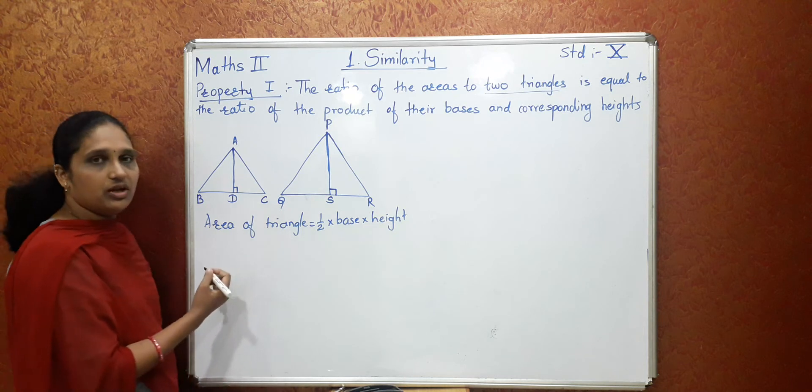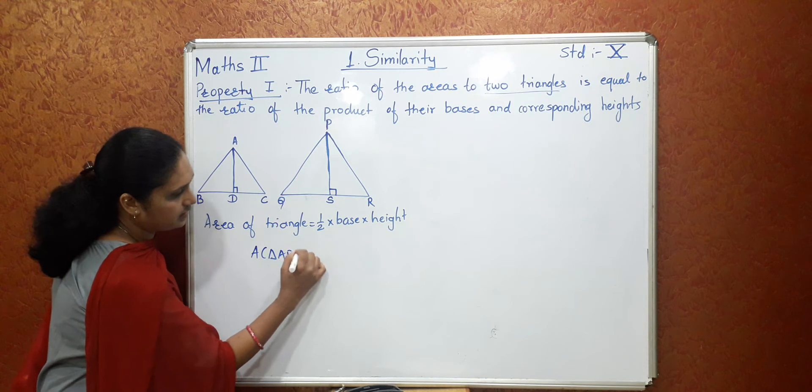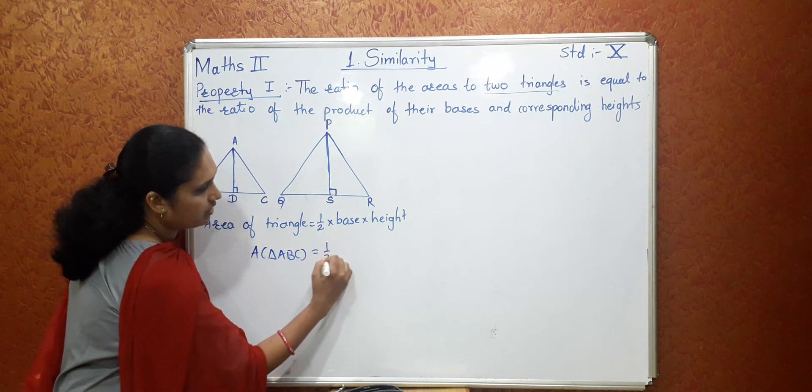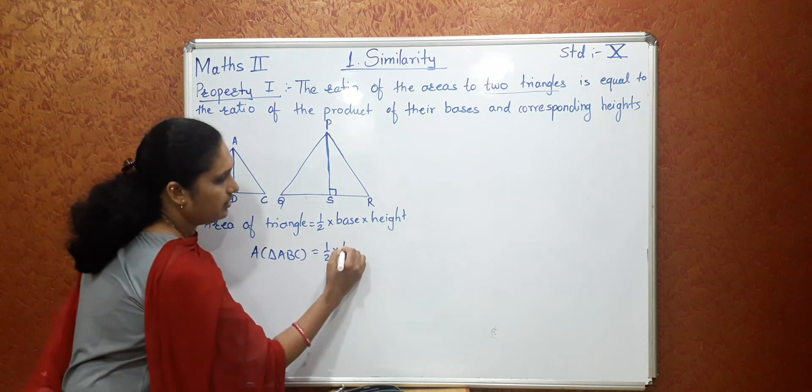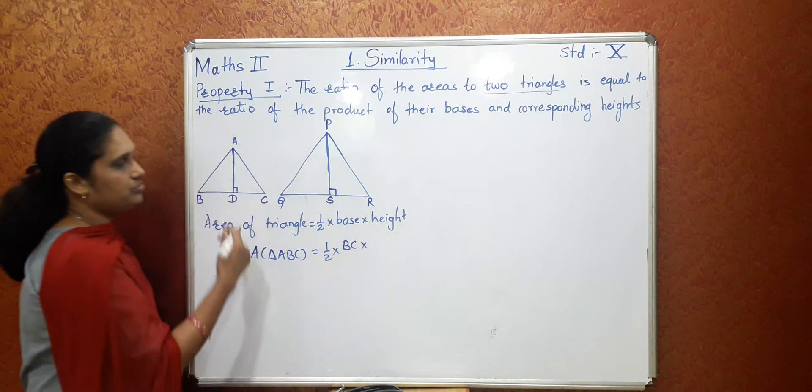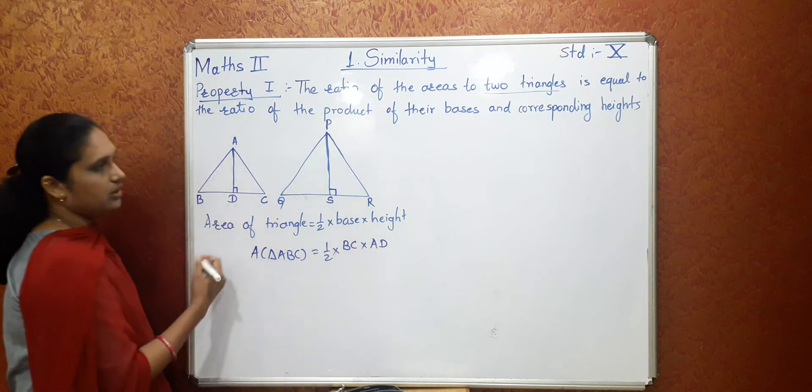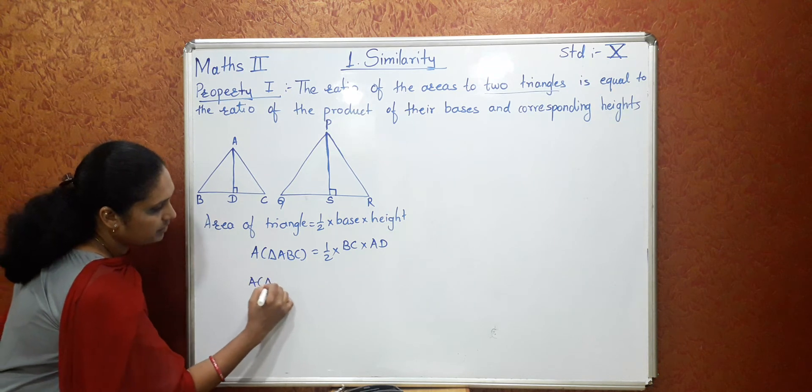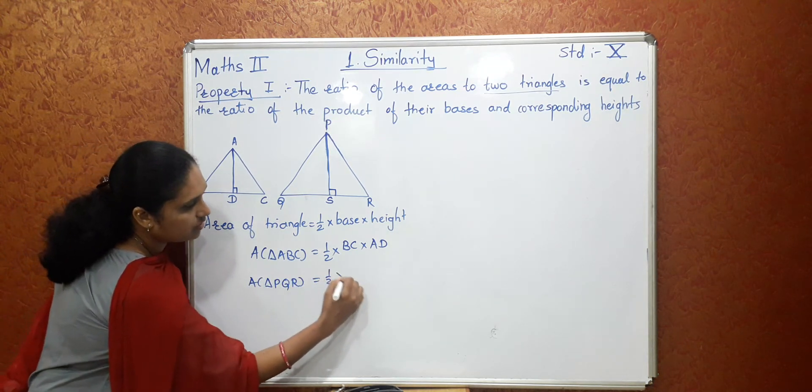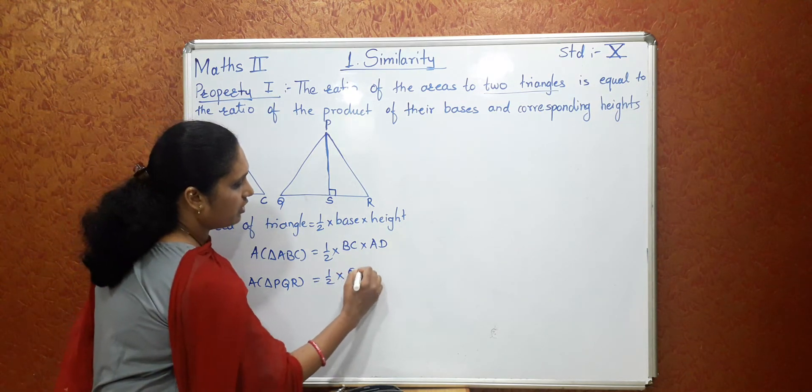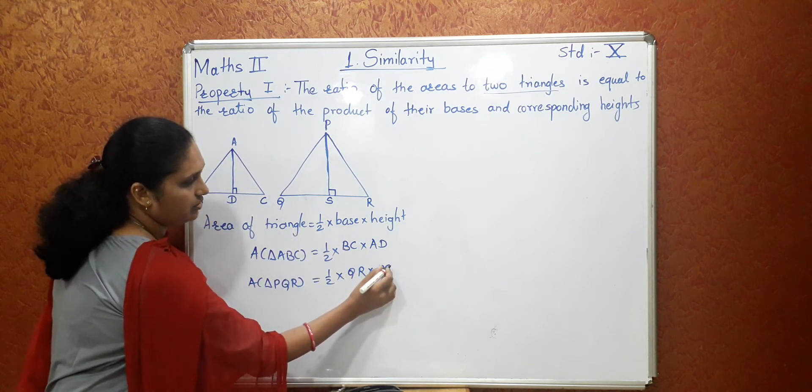Now we are going to use this formula in our triangle. So first triangle. Triangle ABC equal to half into base of ABC is BC. So we will write BC into height is AD. So we will write AD. Now the second triangle area we will find similar way. Triangle PQR equal to half into QR into PS.